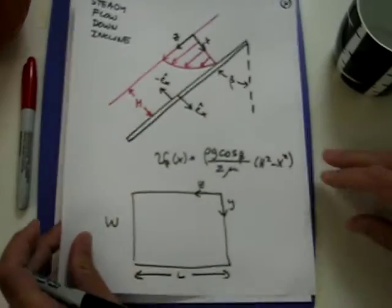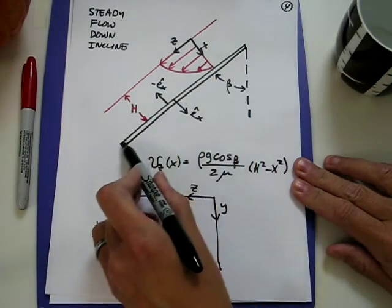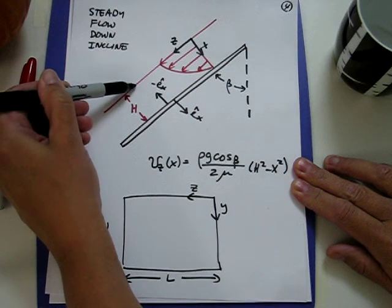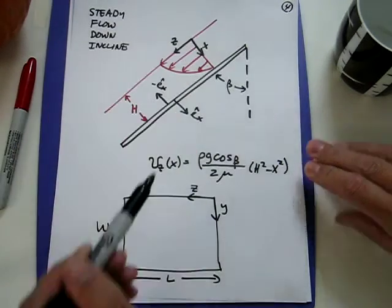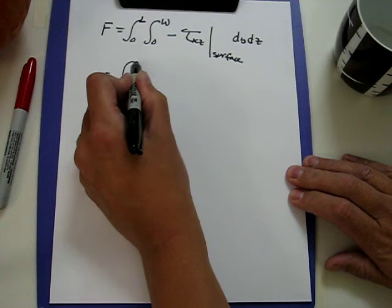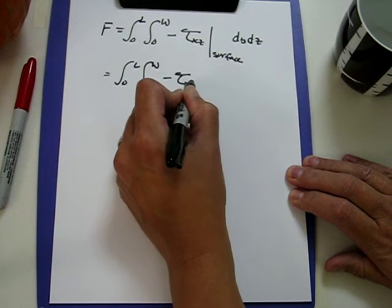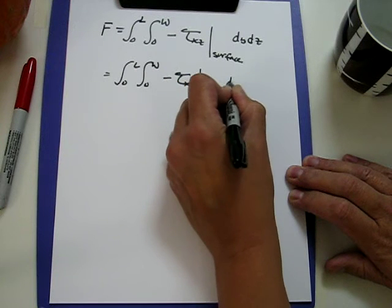Evaluated at the surface means that we want the value at x equals h. x equals 0 is the top surface, x equal h is this bottom surface. So what we want is the integral from 0 to L, the integral from 0 to w of minus tau_xz evaluated at x equals h dy dz.